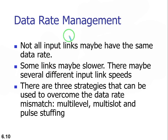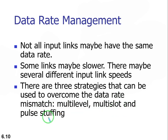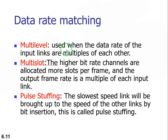Coming to data rate management: not all input links may have the same data rate. If links have different data rates, we need to make them equal. There are three strategies to overcome data rate mismatch: multi-level, multi-slot, and pulse stuffing. If you have a slow lower-speed link, you need to speed it up using one of these strategies.